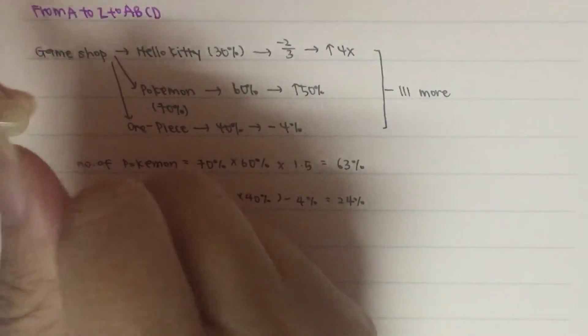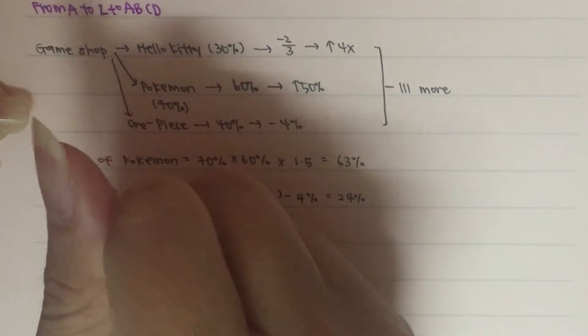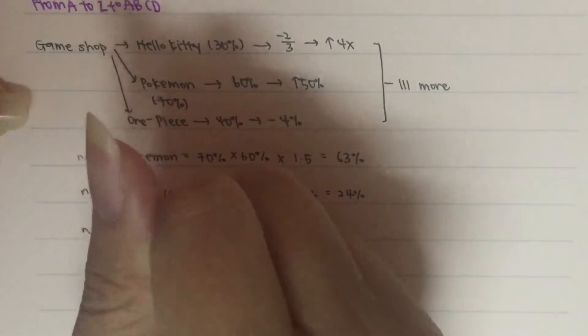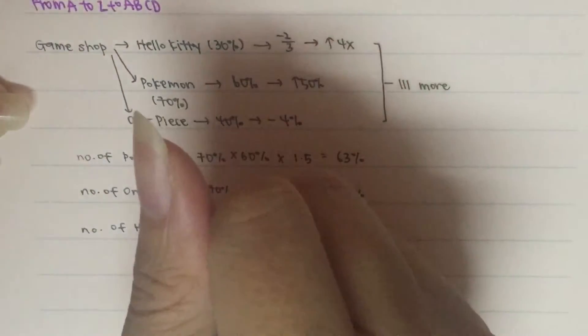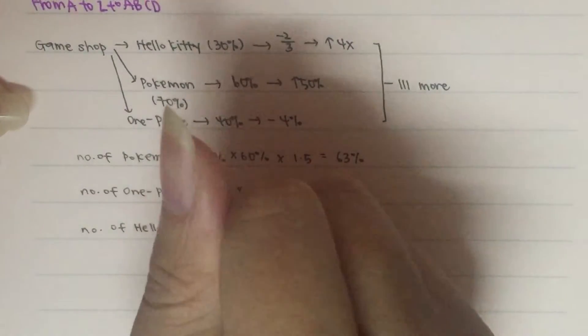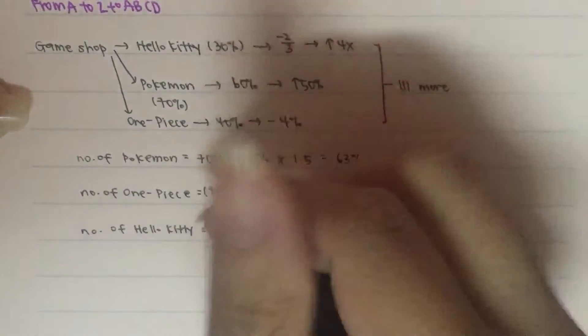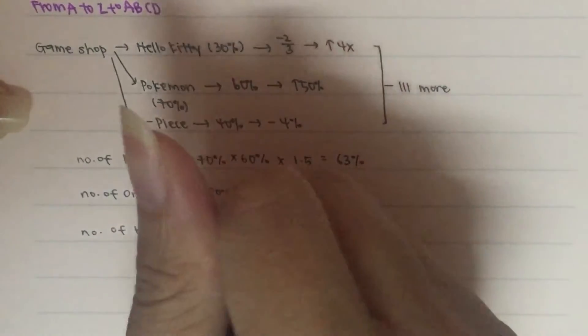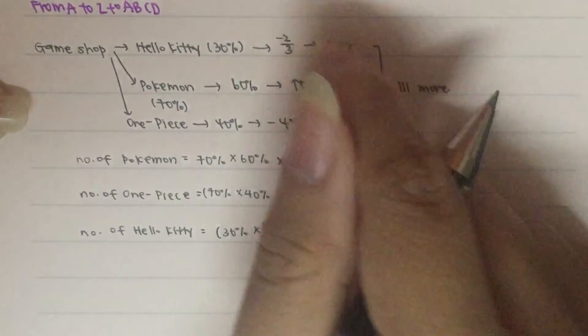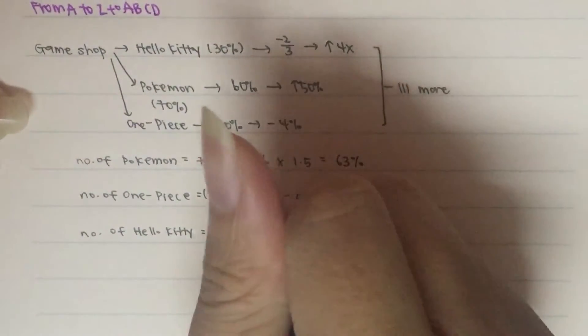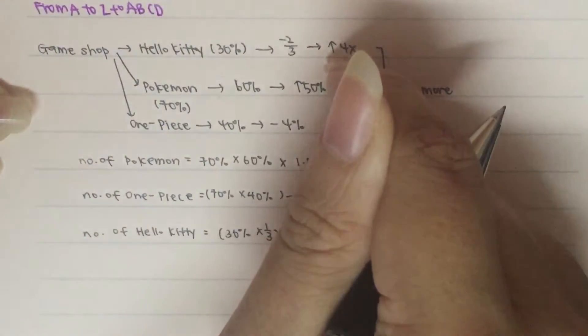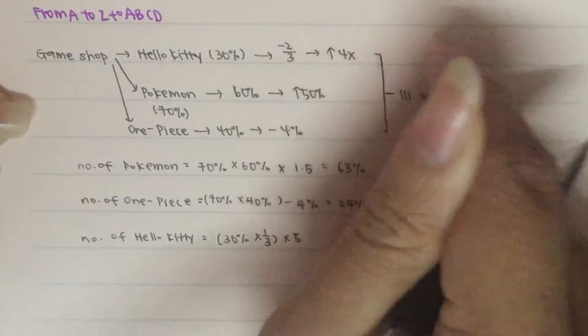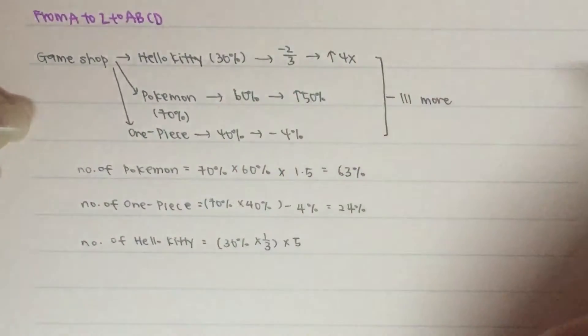Then for number of Hello Kitty Stickers. It will be initially 30%. Then we actually sold 2 thirds. So we only left with 1 third. Then there is an increase by 4 times. So now there is 5 units. Which means that 1 unit then increases by 4 times. So now there is a total of 5 units. So therefore, this will end up to be 50%.